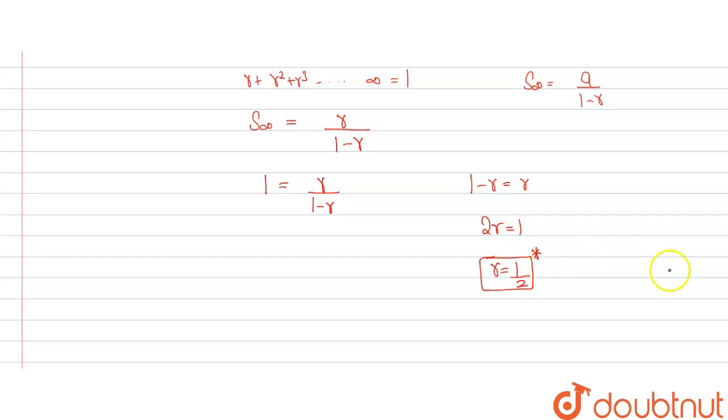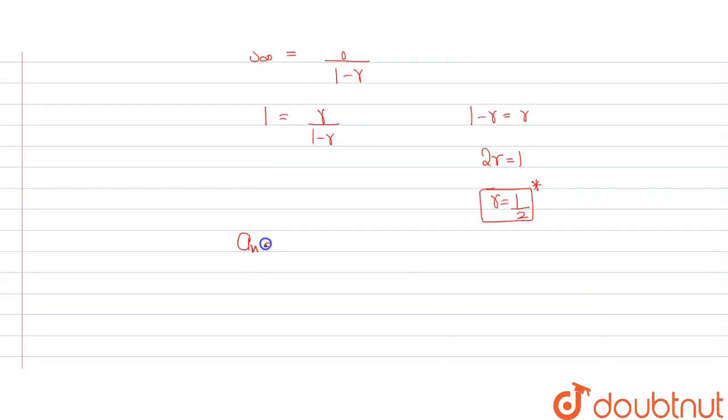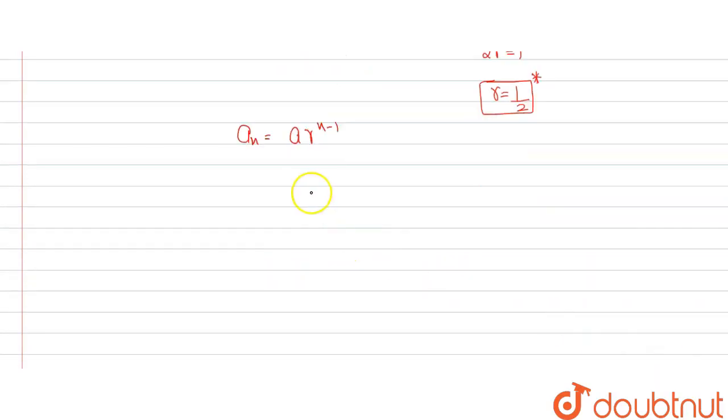Since value of r is 1/2, and we know that nth term of GP is given by a × r^(n-1), and we have to find the fourth term, which means n = 4.